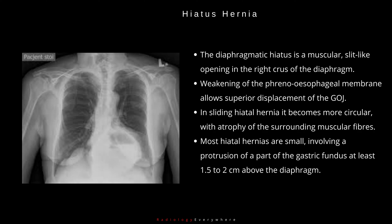This change in configuration explains the main clinical consequence of sliding hiatal hernias. Most hiatal hernias are small, involving a protrusion of a part of the gastric fundus at least 1.5 to 2 cm above the diaphragm. At the opposite extreme, the entire stomach may be intrathoracic.